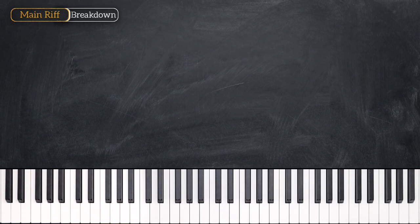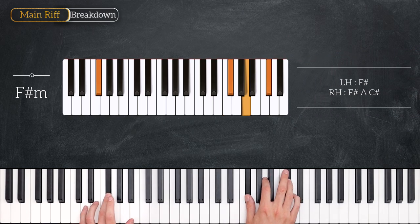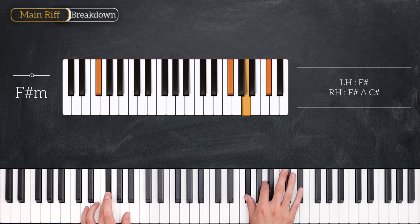First of all we have F sharp minor. So for the left hand that is F sharp and then the right hand has F sharp, A and C sharp. So that's F sharp minor in root position just like the next two chords.